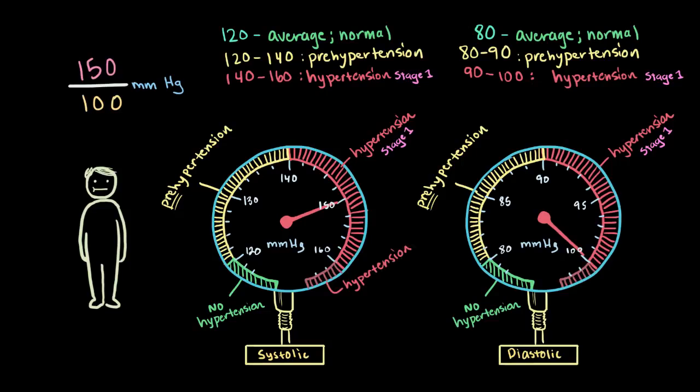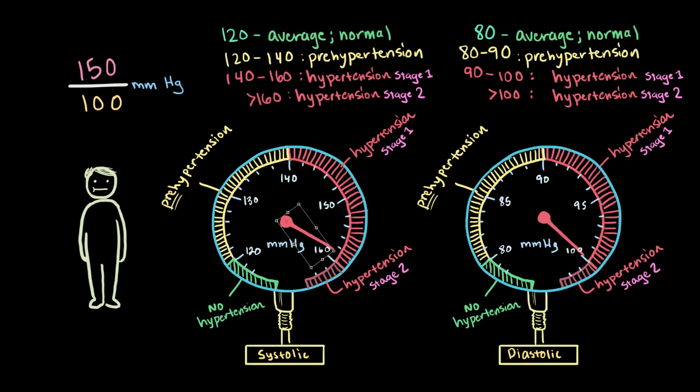Now, there are only two stages, so stage 2 is really anything above 160 on the systolic side, and 100 on the diastolic side. So, for example, again, if my blood pressure was 170 over 110, that would be stage 2 hypertension.